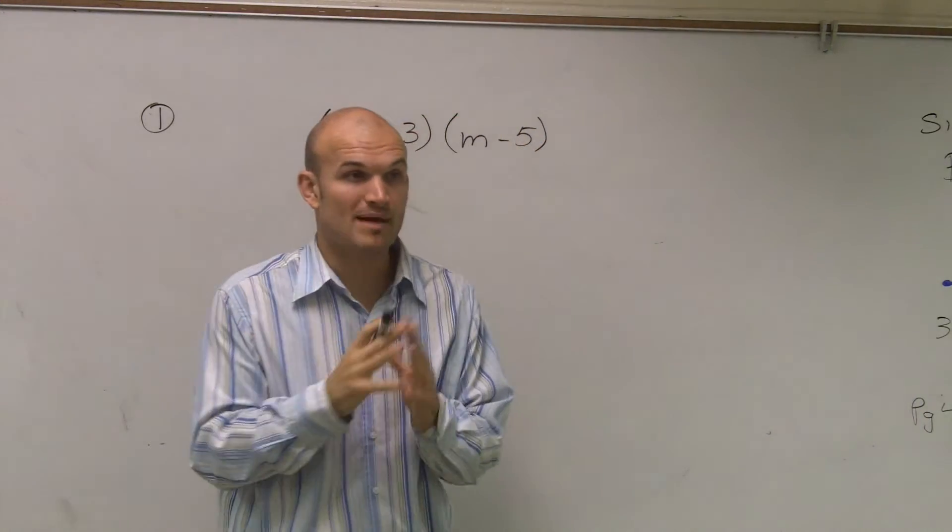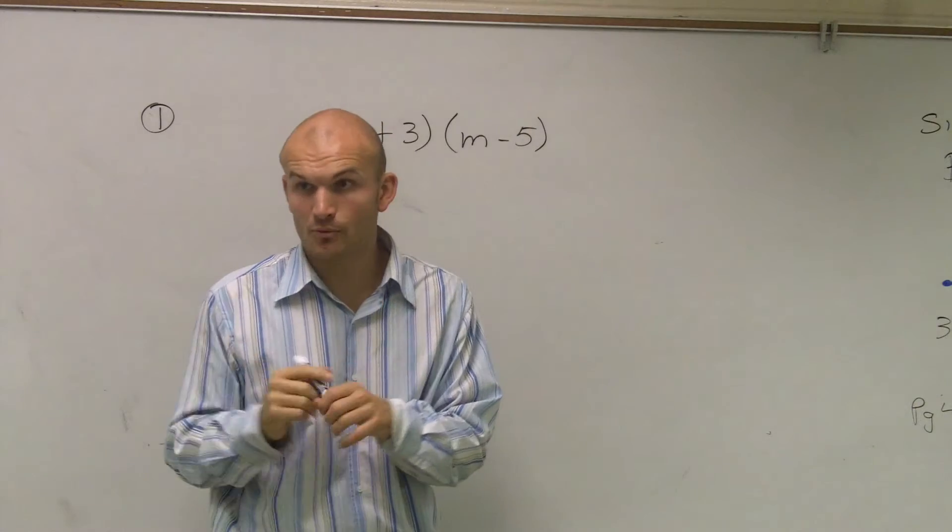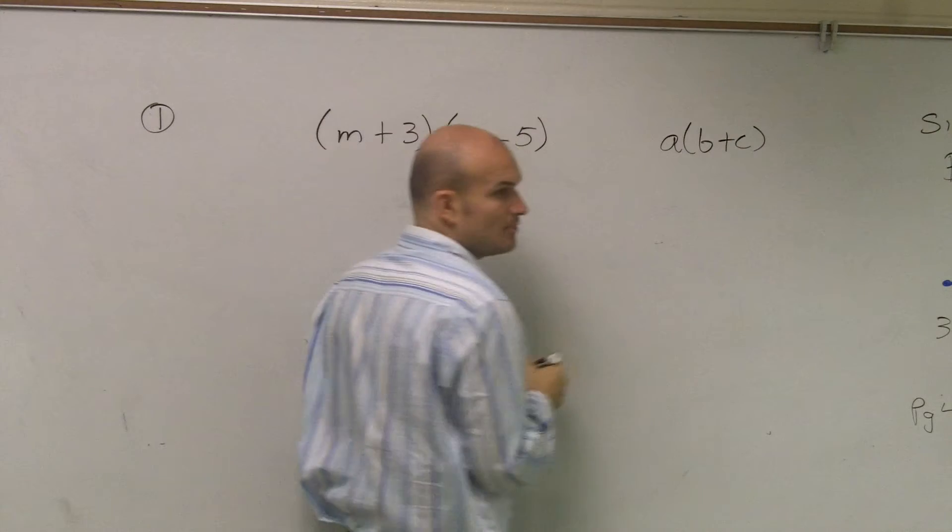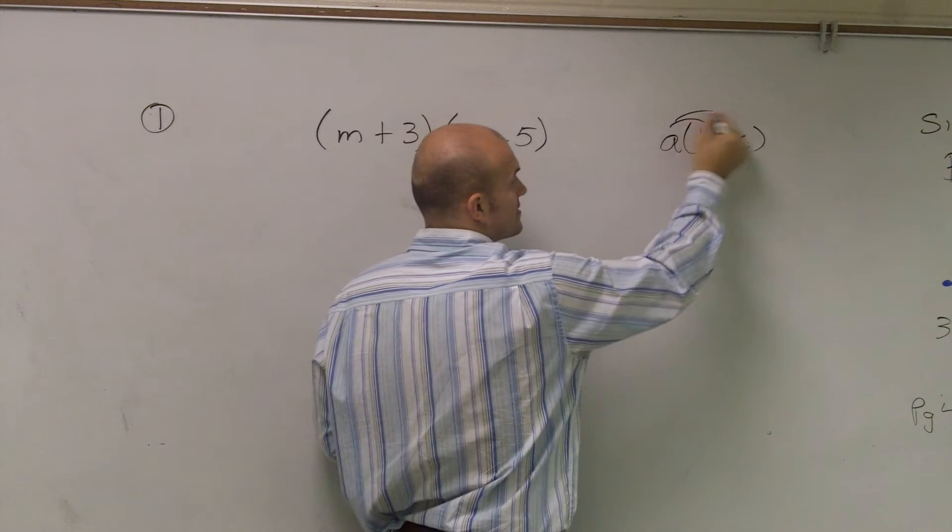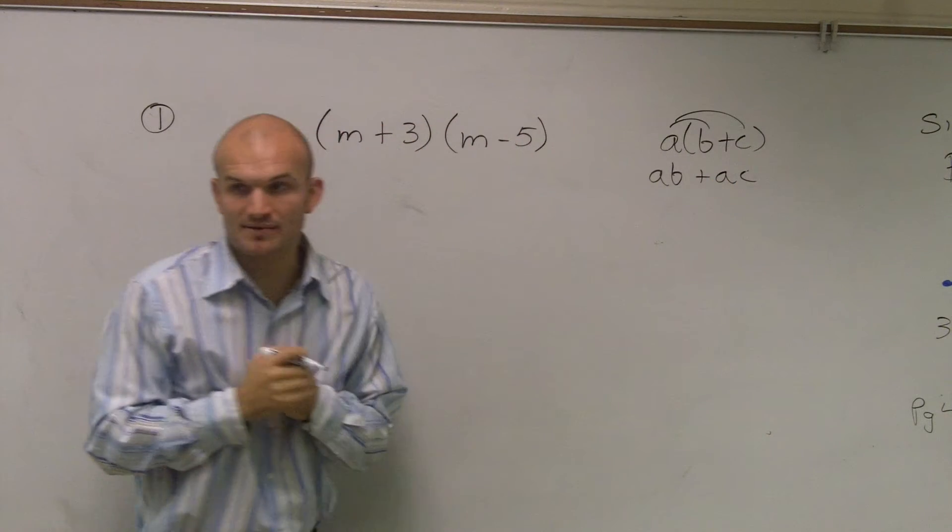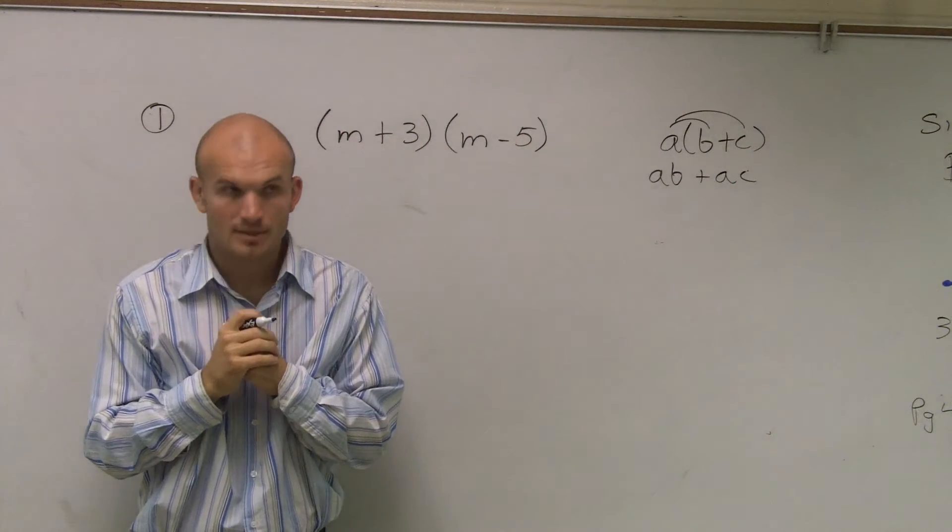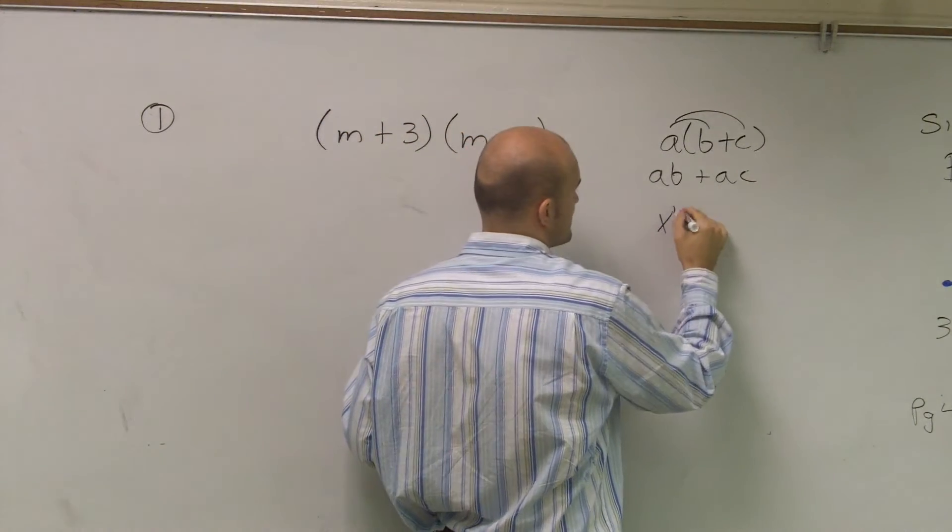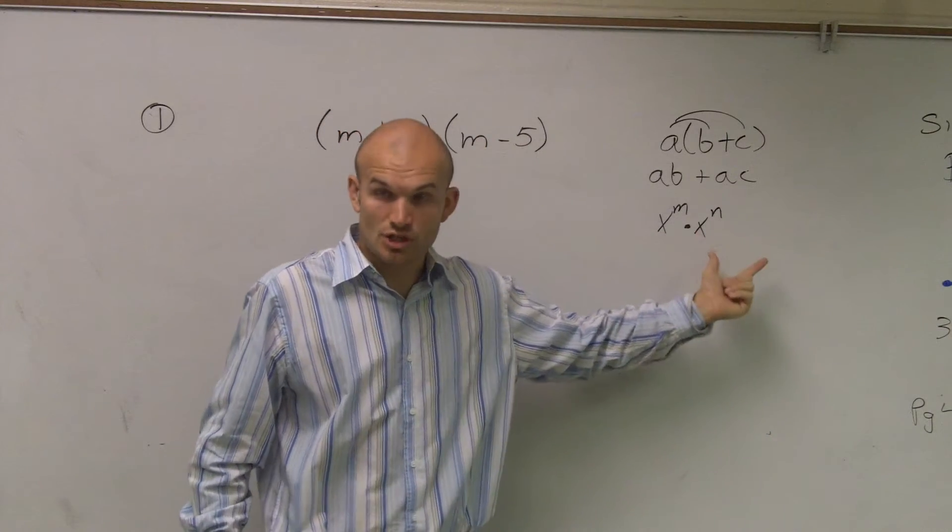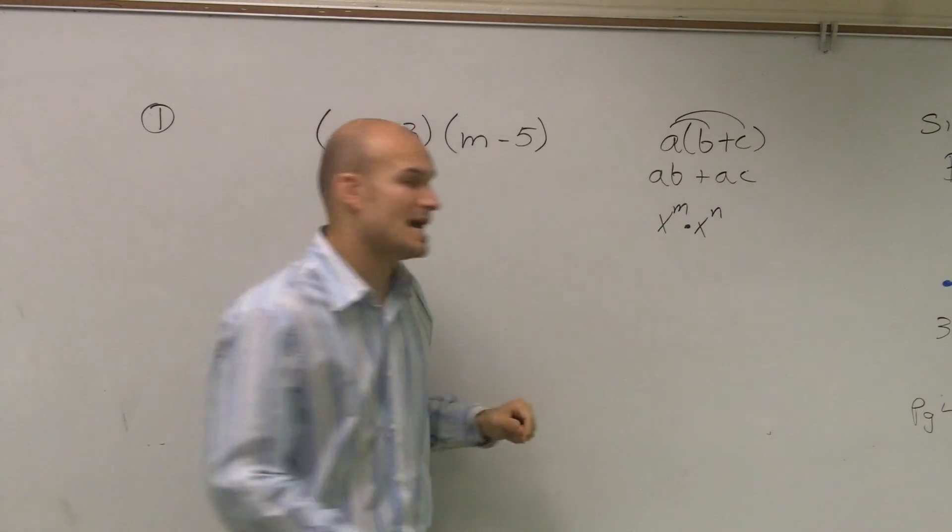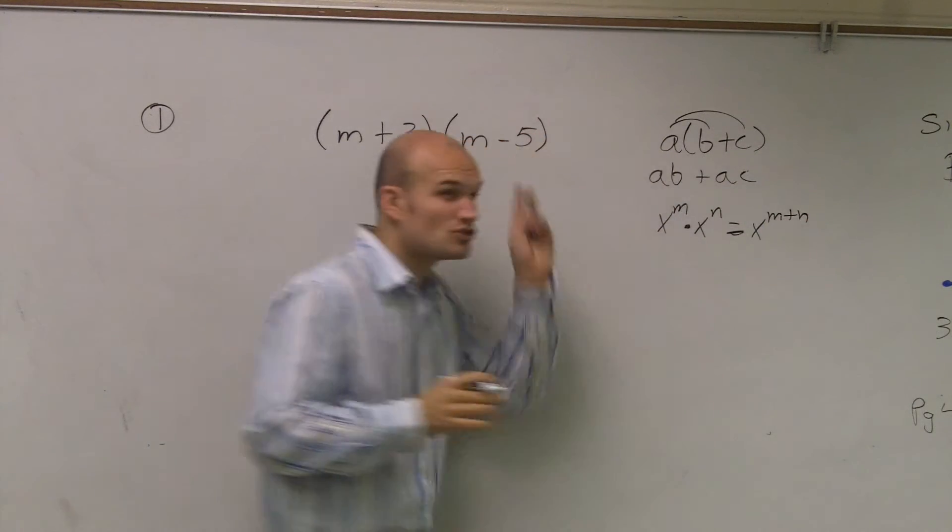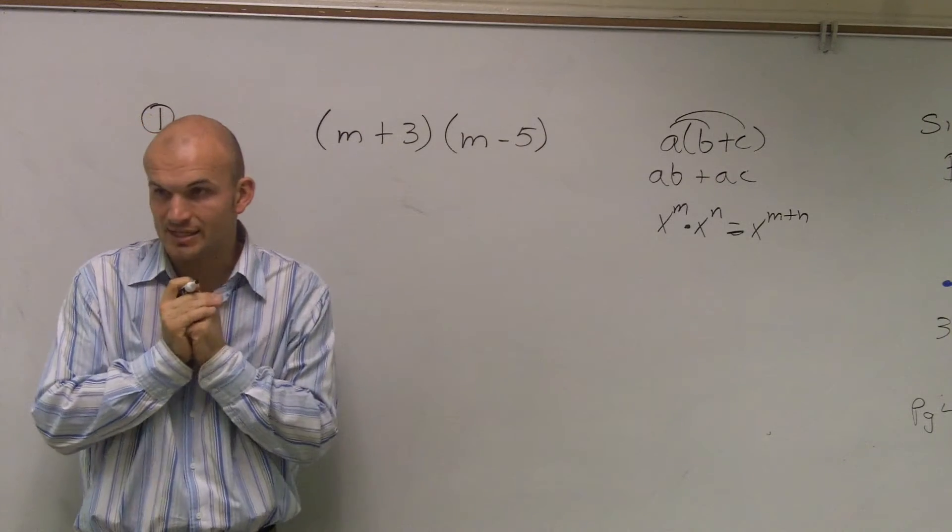Now, a couple things we need to remember when we're doing this. There's a couple rules that we've already explained. The first one is distributive property. The distributive property says whenever you have a number outside parentheses, that multiplies times both of your terms inside the parentheses. The next rule that you need to understand is when you multiply monomials, as long as they have the same base, you add the exponents. These are two crucial rules that you guys need to know.